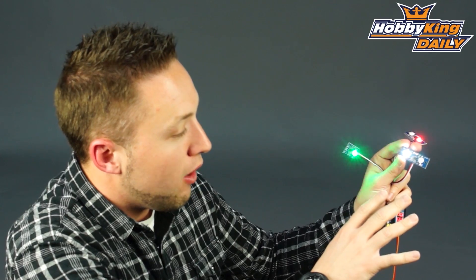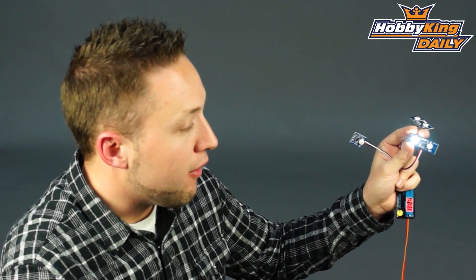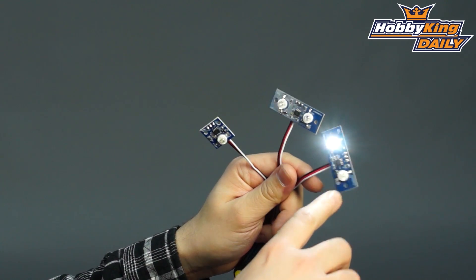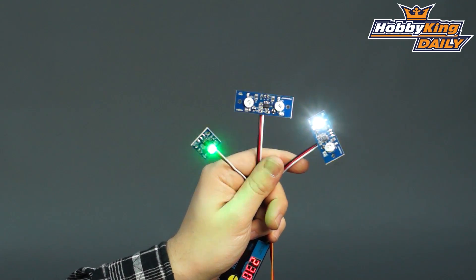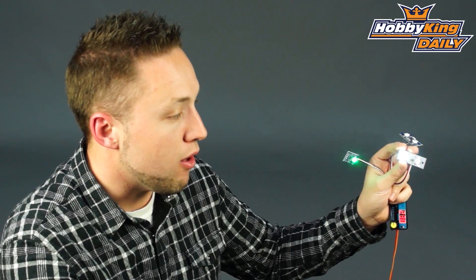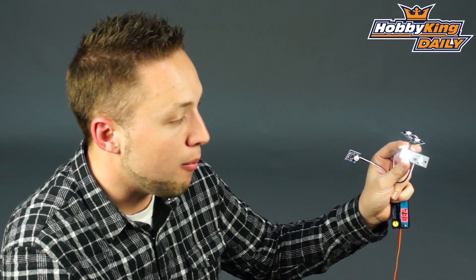Now these are on the website now. They're all active, so you want to check them out on the new items page. And quick rundown, it's 3.3 to 5.5 volts DC. So perfect to run off your receiver, your radio system voltage in your model.